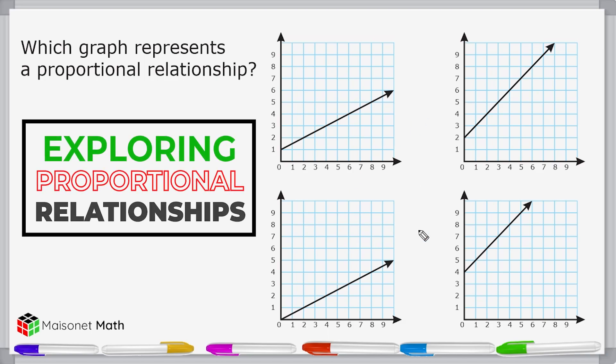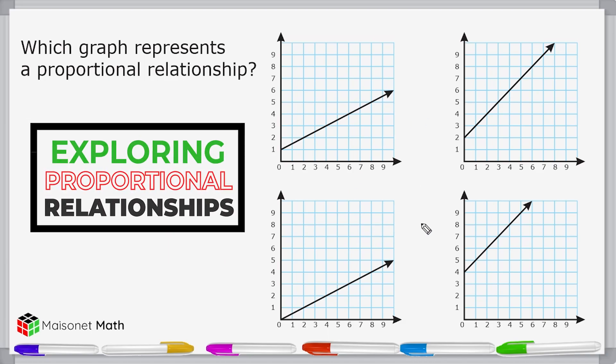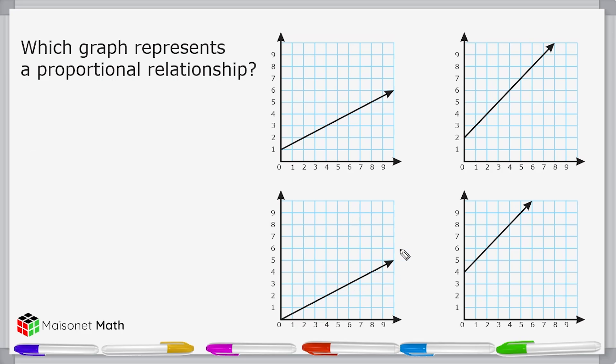We have to determine which of these four graphs represent a proportional relationship. That would be this graph right here, because it meets two conditions necessary for it to be a proportional relationship. The first being is that it represents a linear relationship, which simply means there is a straight line. But all four of these graphs have a straight line. But what distinguishes this graph from the others is that it begins at the origin.